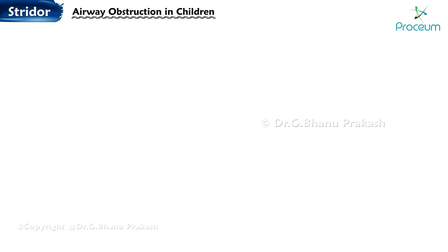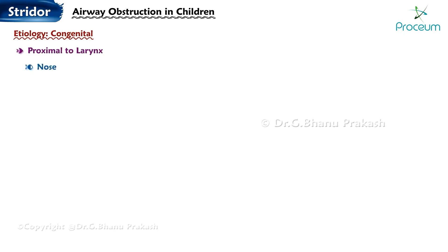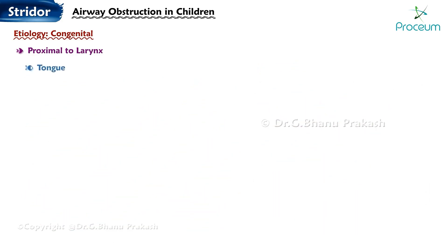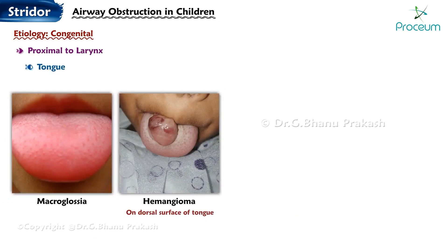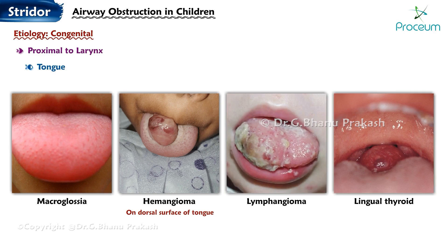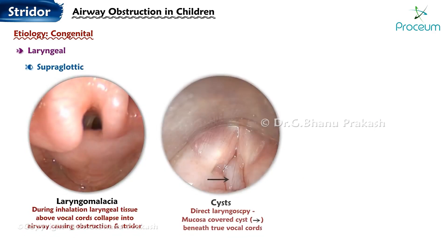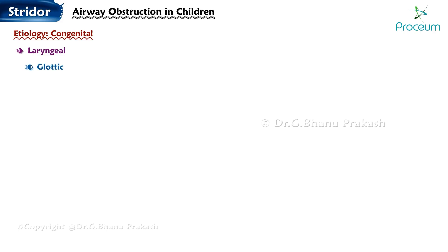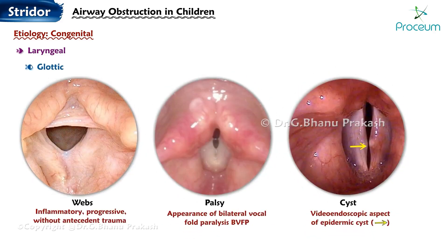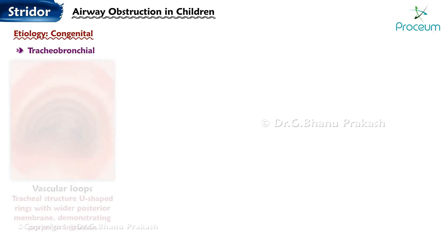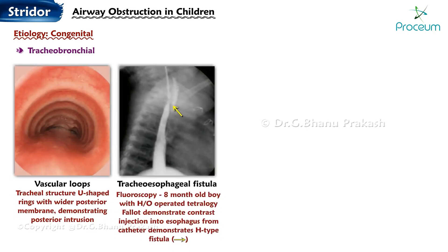Causes of airway obstruction in children. Congenital causes proximal to the larynx include: nose — choanal atresia; mandible — micrognathia; tongue — macroglossia; hemangioma; lymphangioma; lingual thyroid, etc.